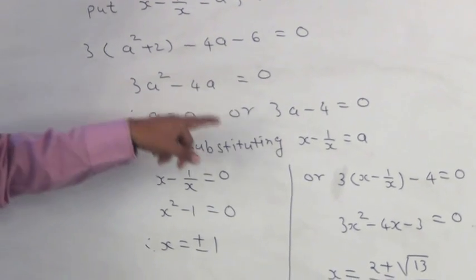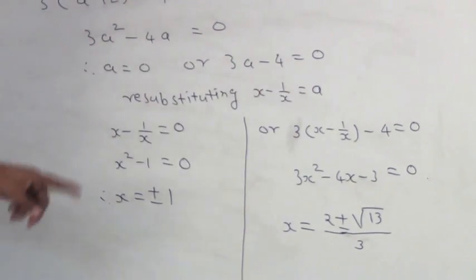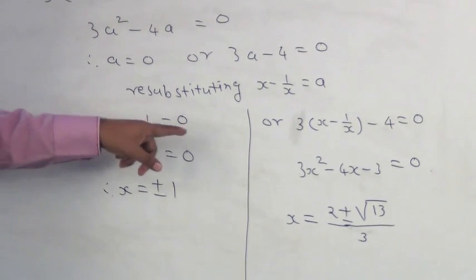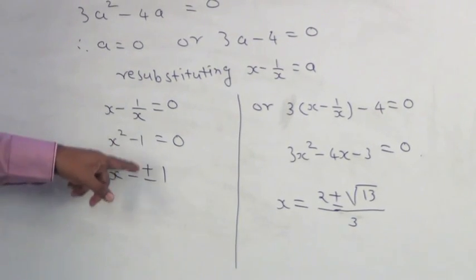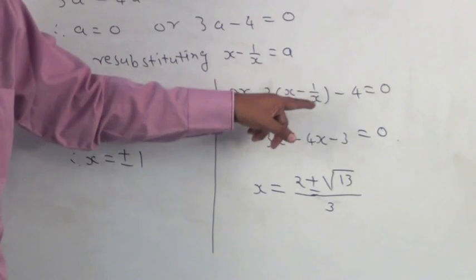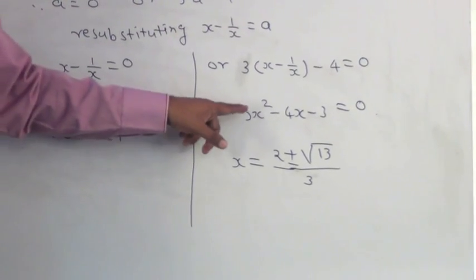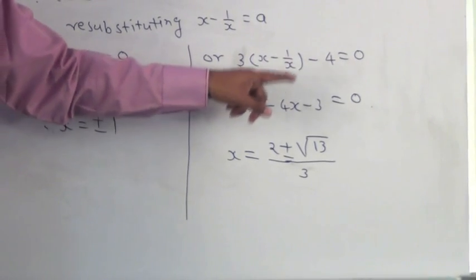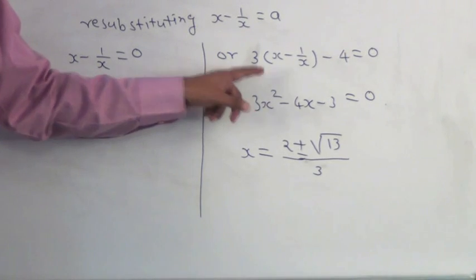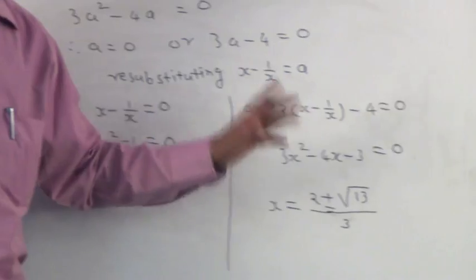Resubstituting the values for x minus 1 upon x is equal to A we get x minus 1 upon x is equal to 0. x square minus 1 is equal to 0, so values of x are plus or minus 1. Here, 3 in bracket x minus 1 upon x minus 4 is equal to 0. After simplifying we get 3x square minus 4x minus 3 is equal to 0 and after solving this quadratic equation we get x is equal to 2 plus minus square root of 13 divided by 3. These are the roots of this given quadratic equation.